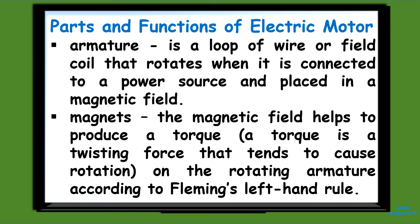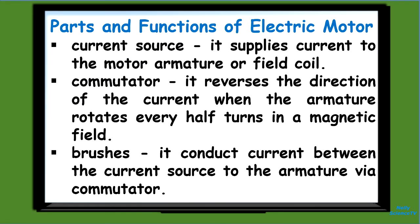Let's summarize the parts of an electric motor and the function of each part. Copy these on your notebook. First, the armature — a loop of wire, or field coil, that rotates when connected to a power source and placed in a magnetic field. Second, the magnet — its magnetic field helps produce a torque on the rotating armature according to Fleming's left-hand rule. Third, the current source — it supplies current to the motor's armature or field coil. Fourth, the commutator — it reverses the direction of current when the armature rotates every half turn in a magnetic field. Finally, the brushes — they conduct current between the current source and the armature via the commutator.